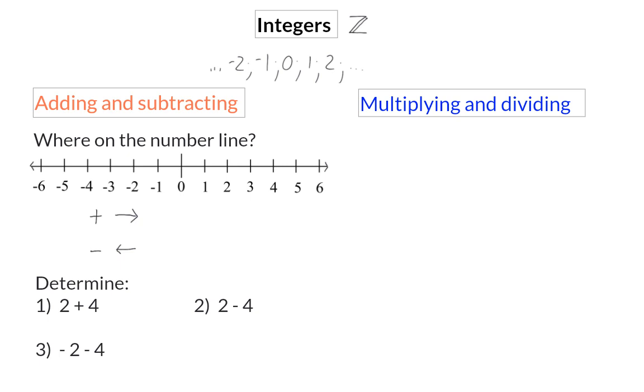In number 1, we start on the value 2 on the number line, and move 4 units to the right, because we are adding. So this will be plus 6. In number 2, we also start at the value 2, but now we move 4 units to the left, because of subtraction, and the answer is minus 2.